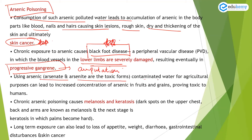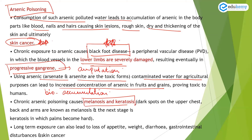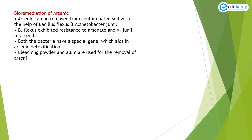Using arsenate or arsenide-contaminated water in agriculture can lead to concentration of arsenic in fruits and grains — we can call this bioaccumulation. Chronic arsenic poisoning can lead to melanosis or keratosis — dark spots on the upper chest, back, and arms — where the palms become hard. Long-term exposure can lead to loss of appetite, weight loss, diarrhea, gastrointestinal disturbances, and eventually skin cancer.